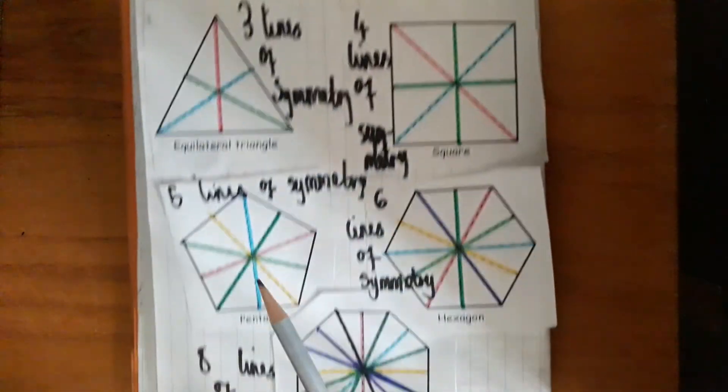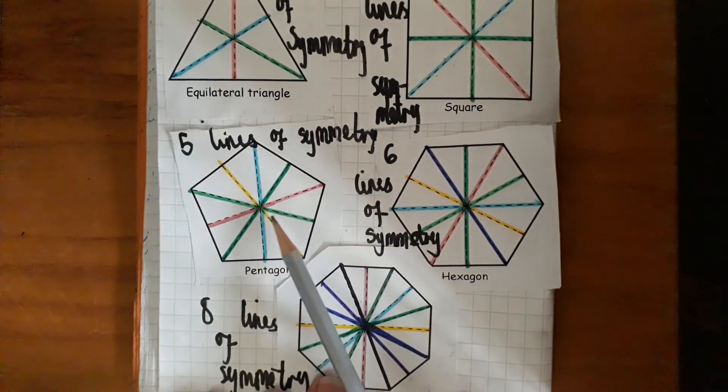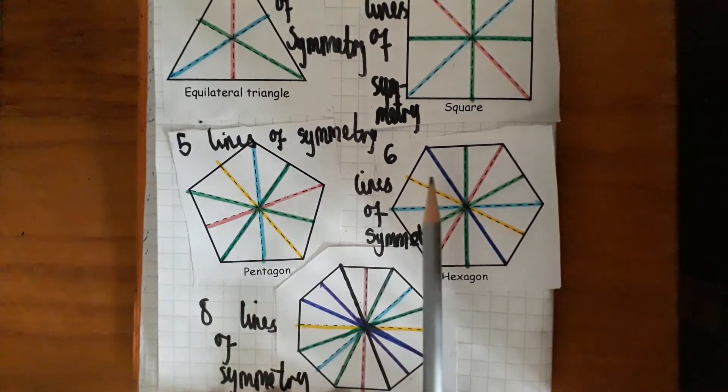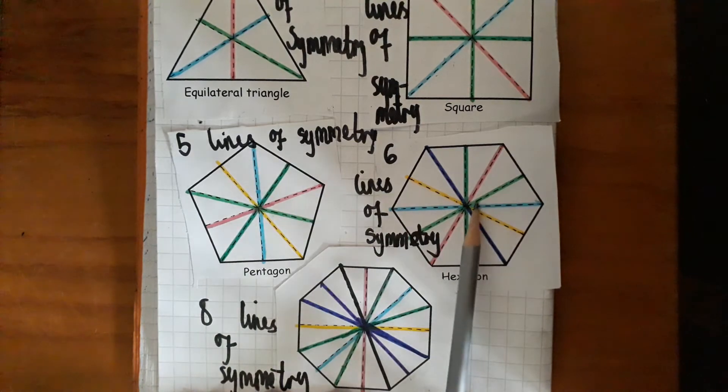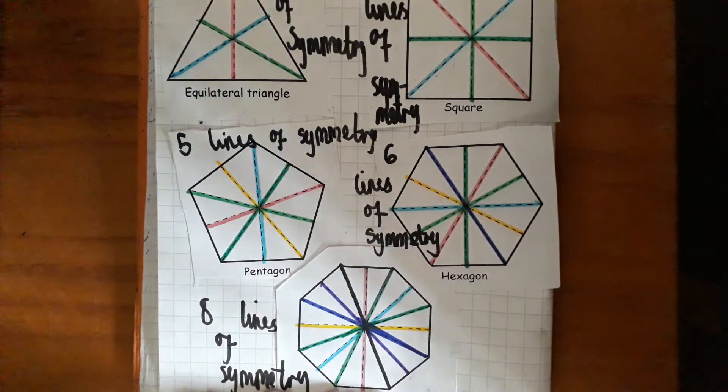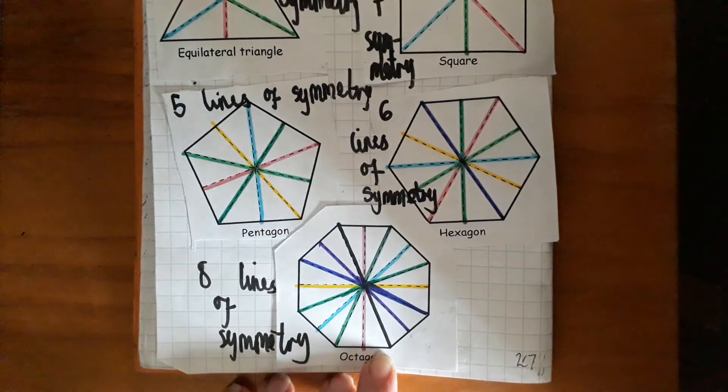Regular pentagon, five sides, five lines of symmetry. Regular hexagon, six sides, six lines of symmetry. And regular octagon, eight sides, eight lines of symmetry.